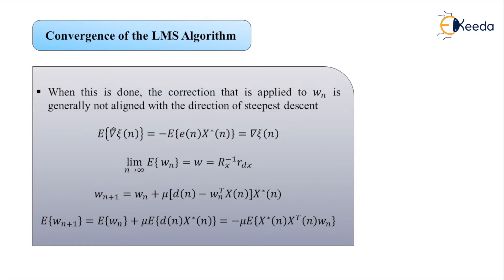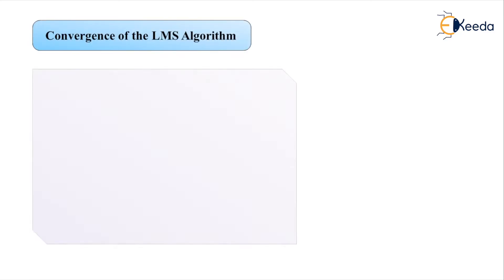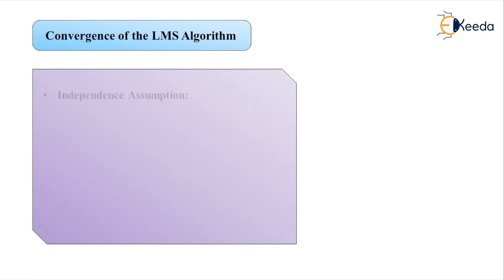Focusing on the last term of this equation, it is not straightforward to evaluate, but it can be simplified considerably if we make the independent assumption: the data X(n) and the LMS weight vector W_n are statistically independent. Convergence of the algorithm is possible under this independent assumption.